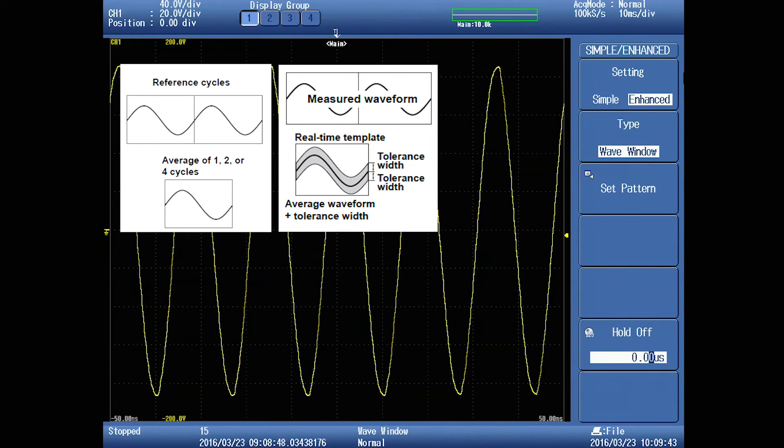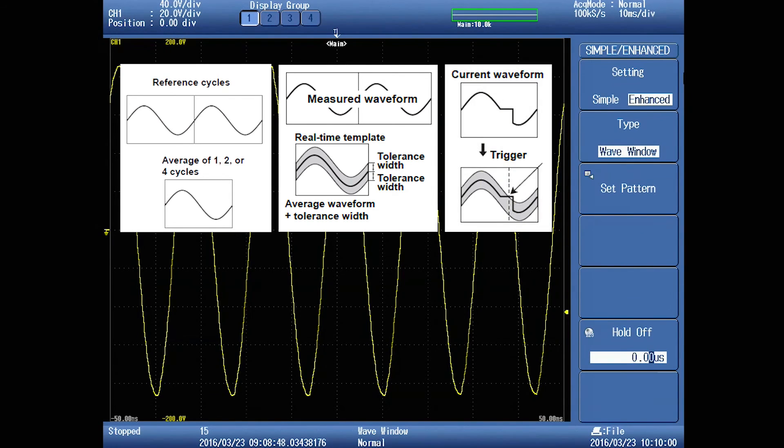As the waveform is being monitored, the scopecorder simply compares each incoming waveform cycle, one or two full cycles of it, up to four, to the previous full cycles of the same waveform. If any anomaly is detected, the scope triggers.